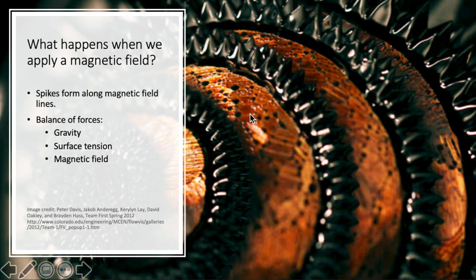So in this instance, our magnetic field is pointing out. So we have the spikes that are pointing out. But you can see this smooth connection between them. That's because of the surface tension. And of course, gravity limits how high those spikes can be.